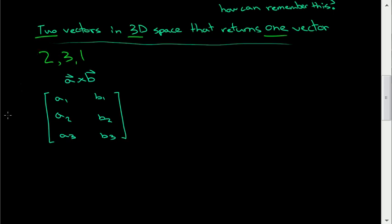So where does 2, 3, 1 come in? Well, we know that this is 2, this is 3, and this is 1. But 2, 3, 1 is the order in which we will do the cross product.